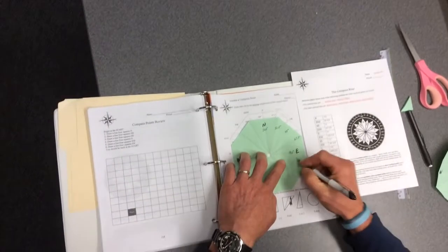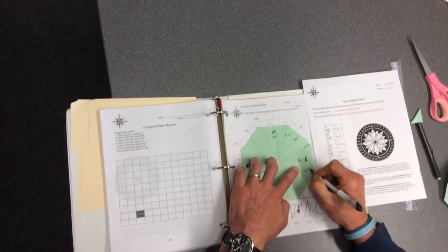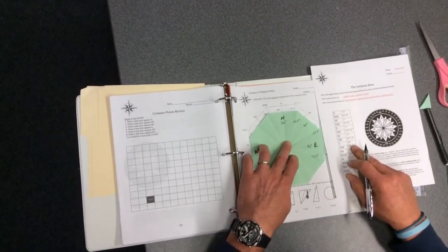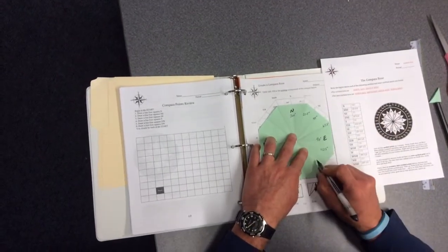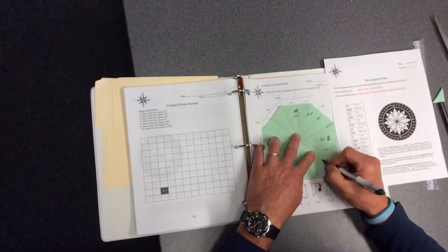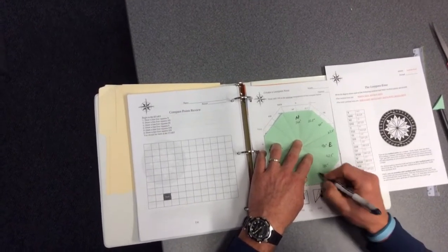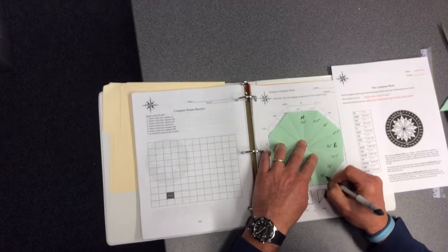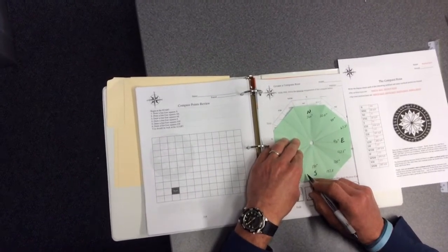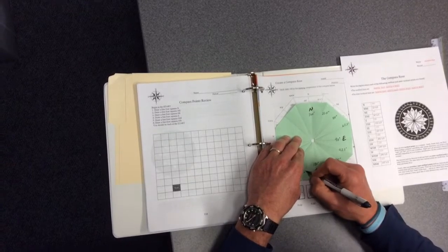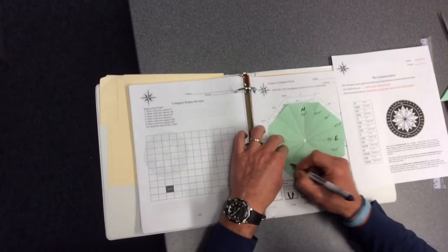Remember to add in not only the degrees but the directions. You are almost there. Once you have your compass rose complete, then we get to use it to find our way. Thank you.